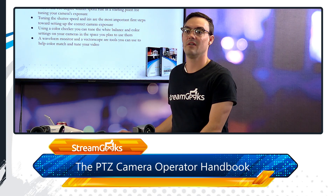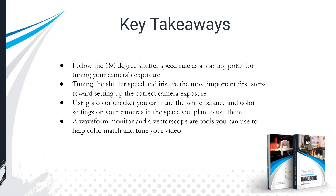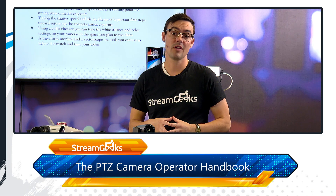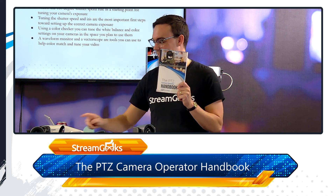Key takeaway: follow the 180-degree shutter speed rule — start there, then tune the shutter speed and iris to get correct exposure at a base level. You can use a color checker to tune your white balance, or even just a white piece of paper if you don't have a gray chart — at least get that one-push white balance done. If you want to go to the highest level, use the waveform monitor and vectorscope. I hope that was helpful. Our next chapter is Chapter 10 in the PTZ Camera Operator Handbook — see you there.